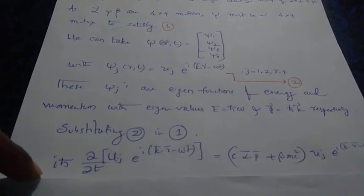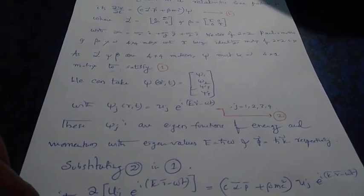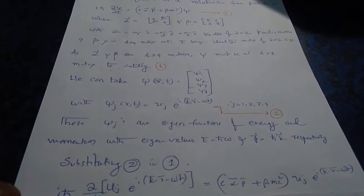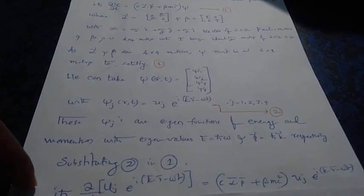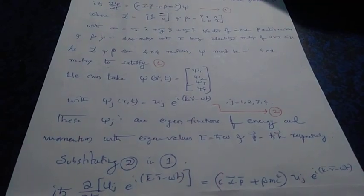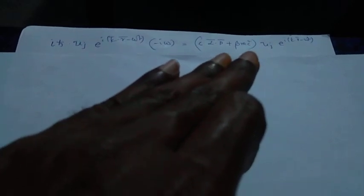If we substitute a component psi_j from equation number two into Dirac's equation number one, then iℏ(∂/∂t) operating on this gives the right-hand side expression. When we perform the partial differentiation with respect to time on the exponential factor, we get minus iω in the bracket, with the exponential as it is.